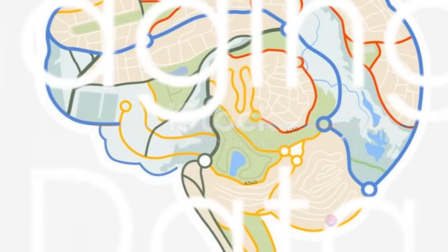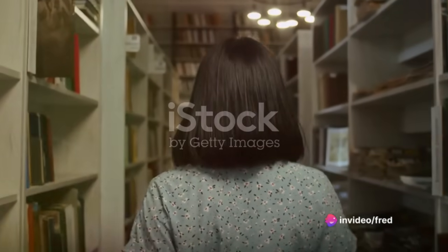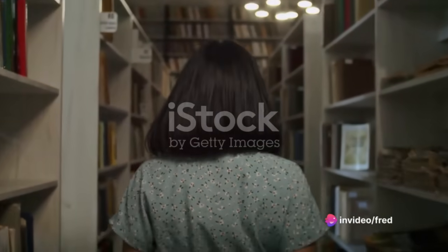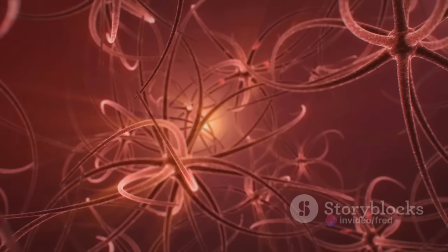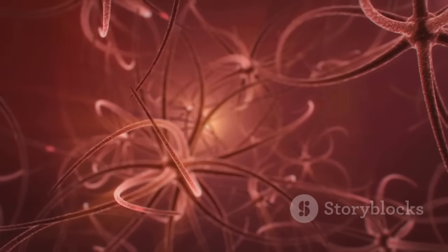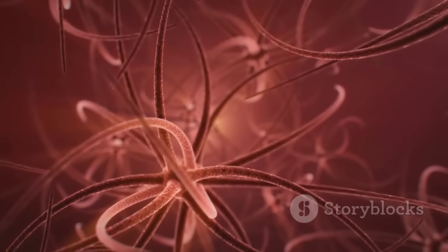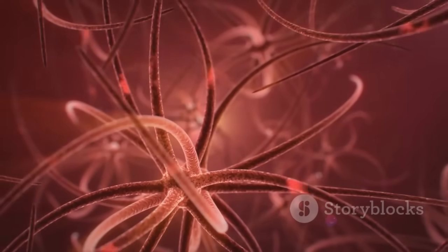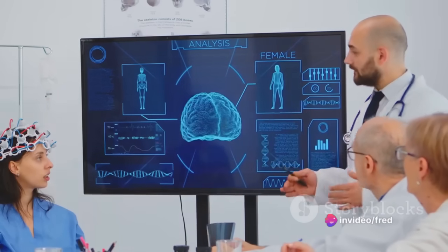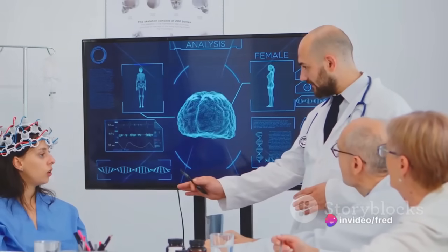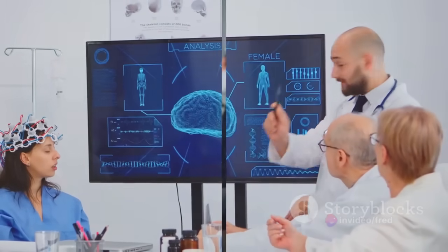Now consider the sheer volume of data the brain generates — it's like trying to make sense of every single word in our library of billions of books. SOMs help us manage this by reducing the dimensionality of neural data, enabling visualization of neural structures and activity patterns on a 2D or 3D grid. This visualization can reveal relationships and help neuroscientists identify trends and outliers in the data.